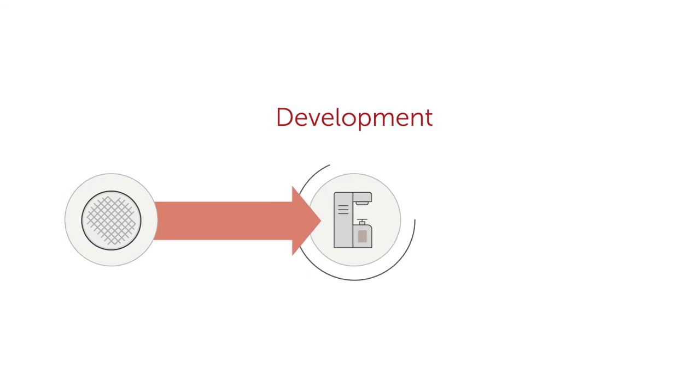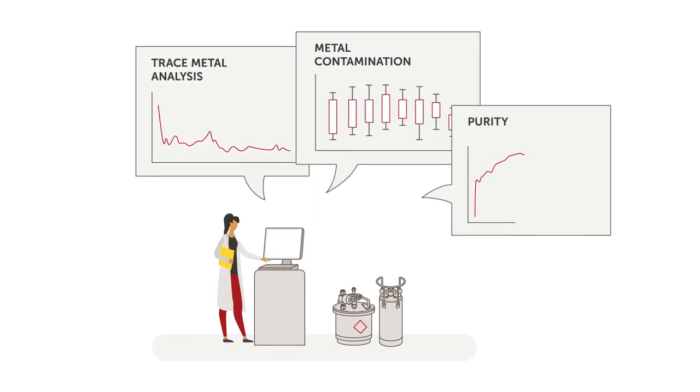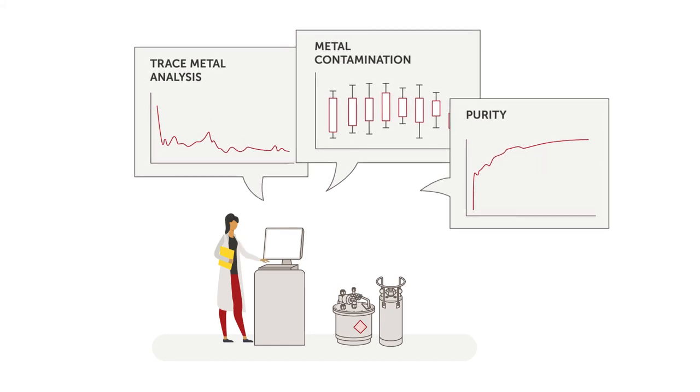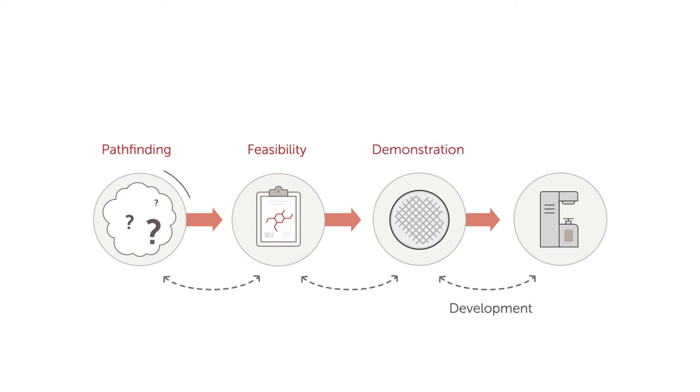A successful demo leads to development and pilot scale manufacturing. At this point, Integris quality and reliability experts join in, testing the material's readiness for manufacturing at scale. The collaborative processes of pathfinding, feasibility, demonstration and development continue iteratively for one to three years until an approved material is qualified.